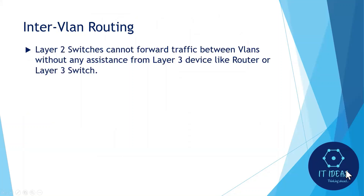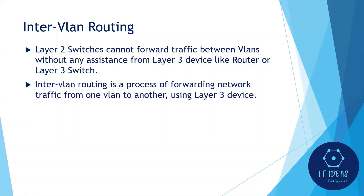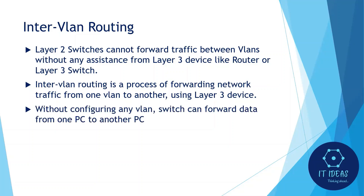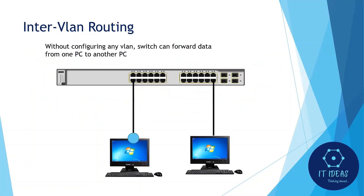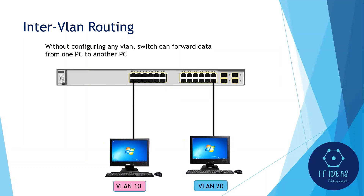Layer 2 switches cannot forward traffic between VLANs without a router or layer 3 switch to provide routing services. Inter-VLAN routing is a process of forwarding network traffic from one VLAN to another VLAN using a layer 3 device. Without configuring any VLAN, a switch can forward data from one PC to another PC. However, after configuring VLANs in a switch, when PC1 from VLAN 10 sends data to VLAN 20, the switch will receive the frame but will not forward it to VLAN 20.